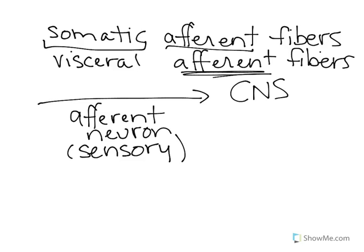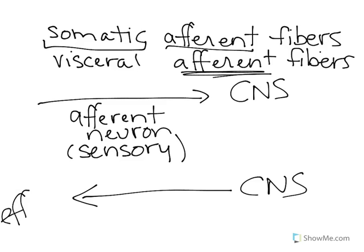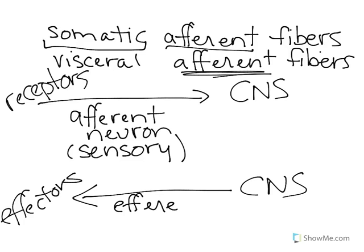Going back to this picture, I'll draw an arrow going in the other direction — here would be the effectors, and here would have been the receptors. The efferent fibers are found within efferent neurons, which are also referred to as motor neurons. These motor neurons are going to tell various effectors what to do, and we have two components of the motor division of the nervous system.